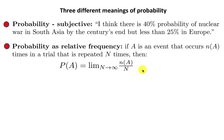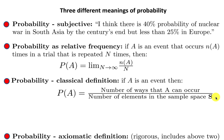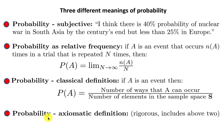Similarly for a die and so many other repeated experiments. The classical definition is that if A is an event, then the probability P(A) is the number of ways that A can occur divided by the number of elements in the sample space S. But mathematicians need something even clearer, and this will take us to the axiomatic definition of probability, which is rigorous and easy to show includes both of the other definitions.